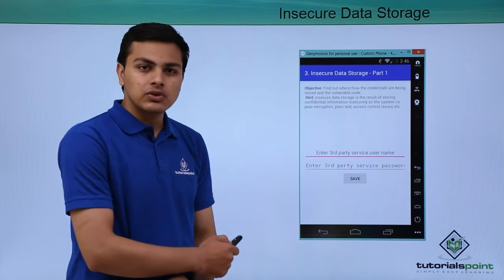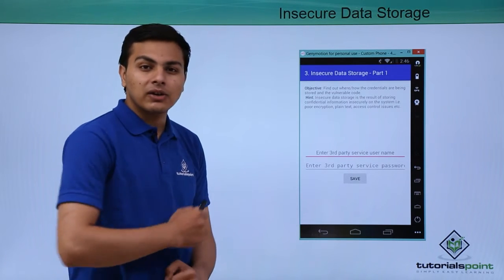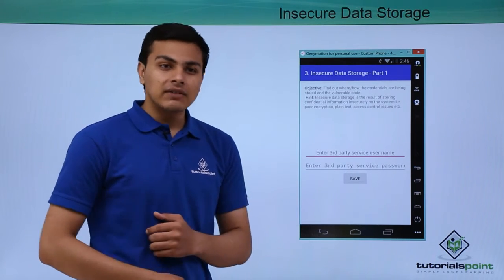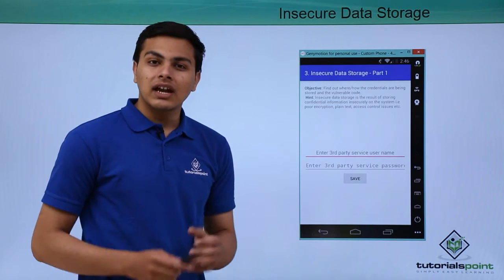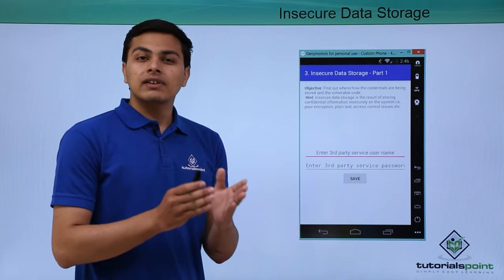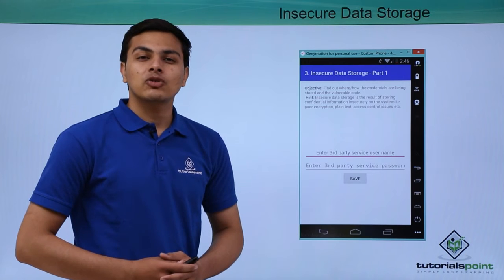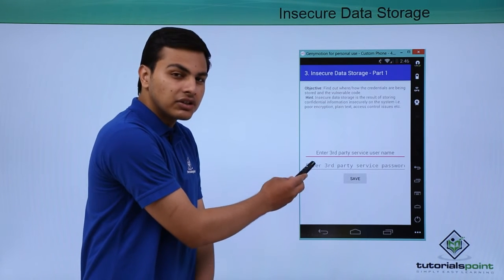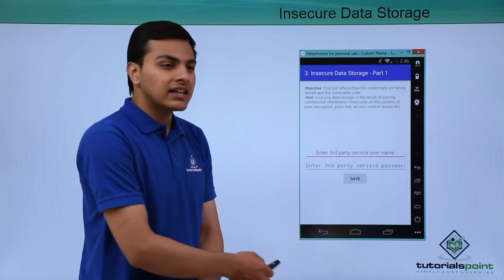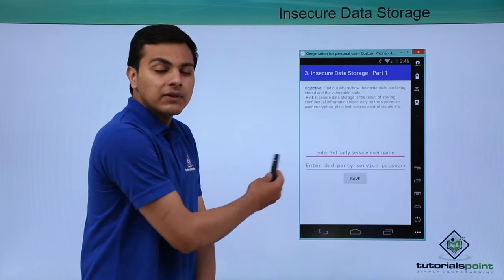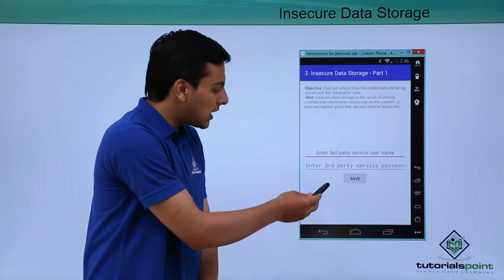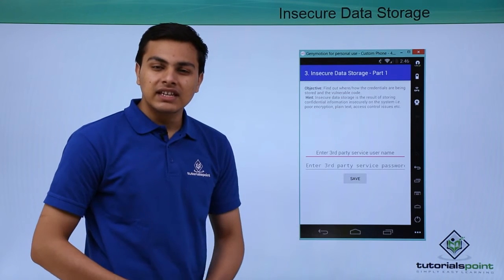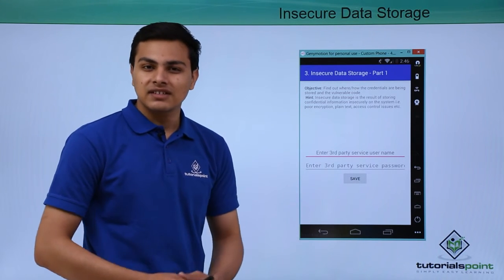Now let's look at the insecure data storage issue in DIVA. Here is the challenge — insecure data storage part one. Our objective is to find out where and how our credentials are being stored by this application. The challenge asks us to enter a username and password, then click Save to see what happens.